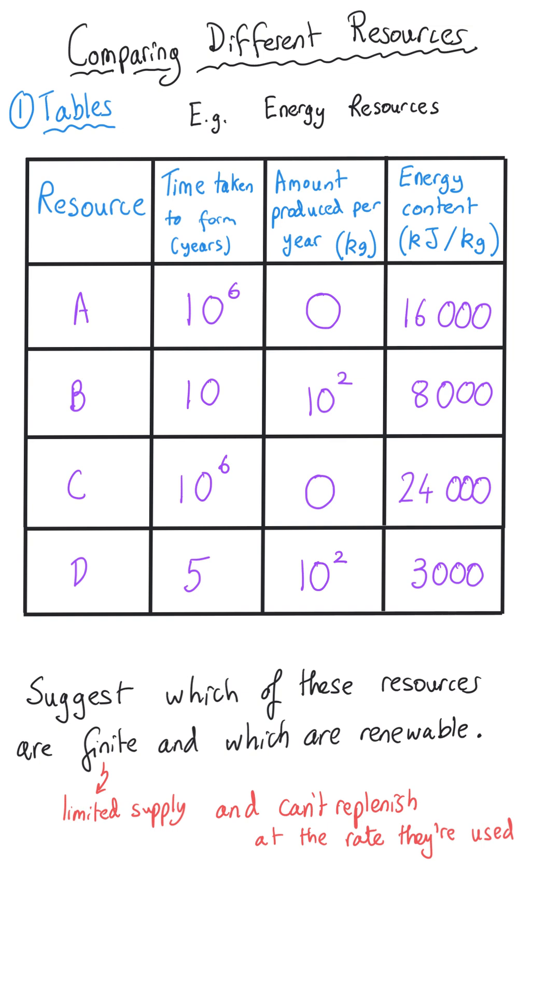And so if we zoom in here on the time taken to form column resource A and resource C take ten to the six years to form.